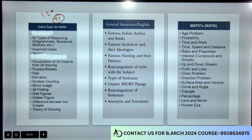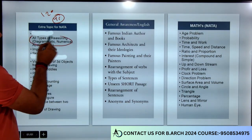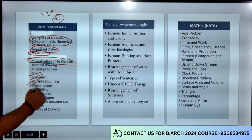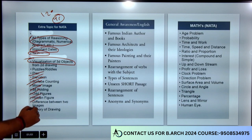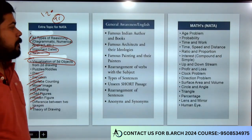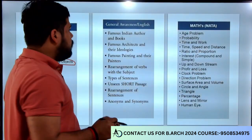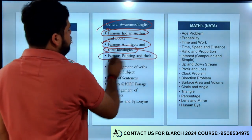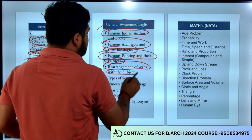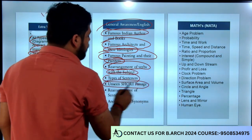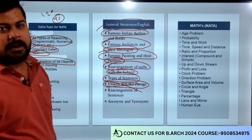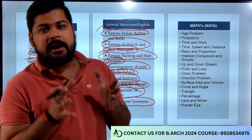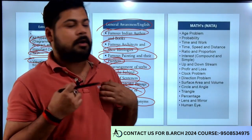Extra topics of NATA 2024: ये सारे हमारे logical होंगे - all types of reasoning, important dates, skyline, visual of 3D objects, plan, elevation, surface counting, mirror image, 3D folding, odd figure out, hidden figure, difference between two images, and theory of drawing। ये basic topics हैं। Point 2 में general awareness और English के topics जैसे famous Indian authors, famous architects and their ideologies, famous painters and their paintings, rearrangement of verbs and subjects, types of sentences, rearrangement of sentences, antonyms और synonyms - basic English grammar से questions आने वाले हैं NATA 2024 में।